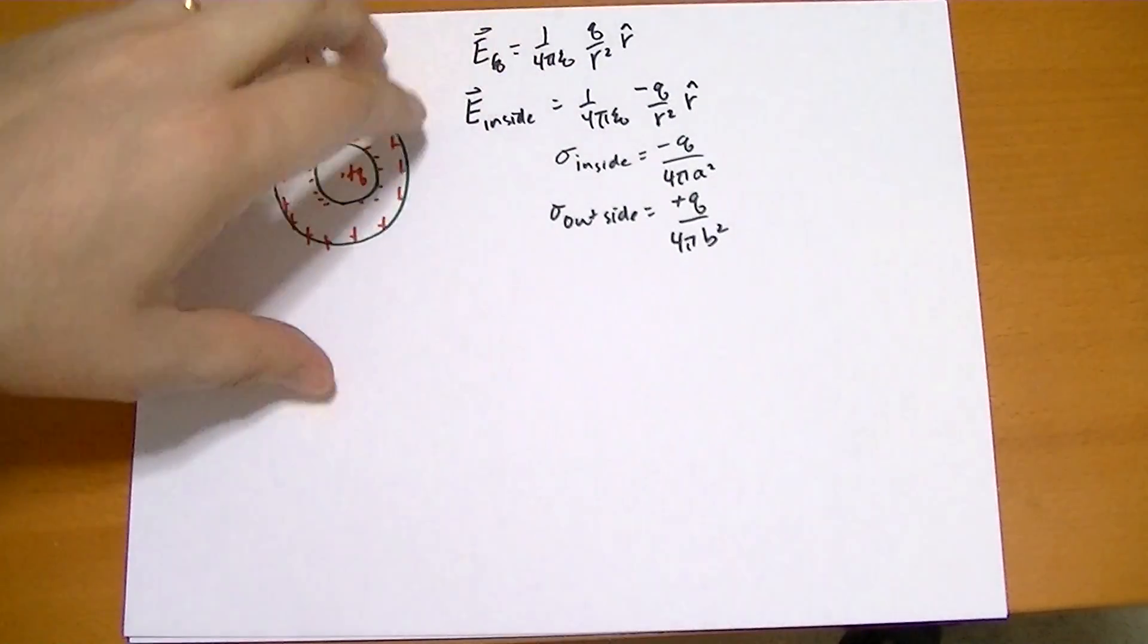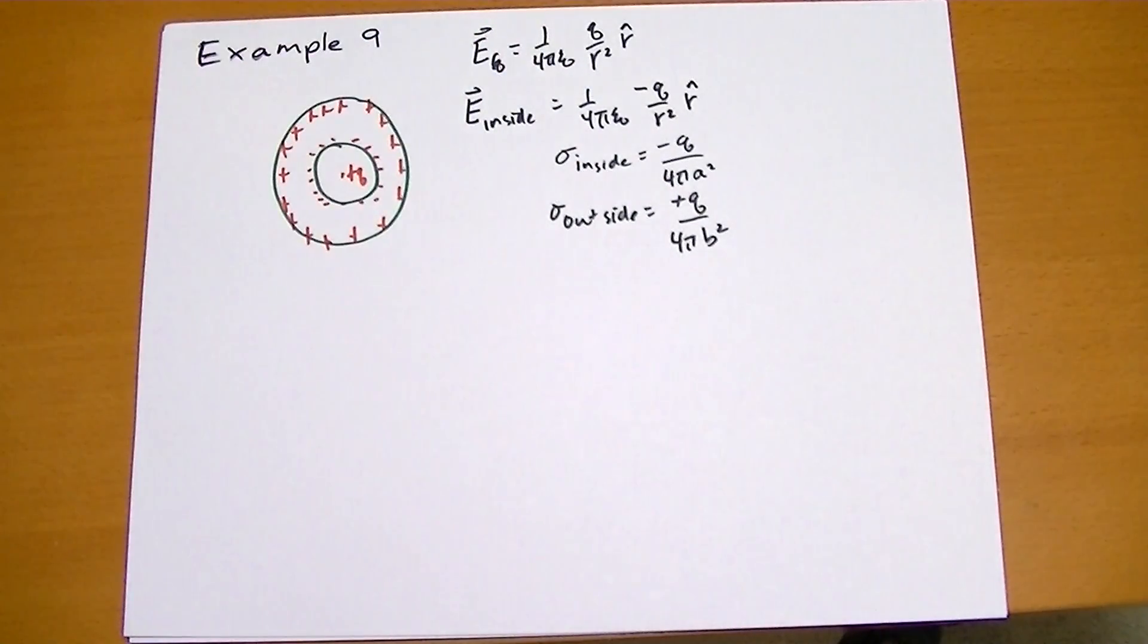So in a way, outside the sphere nothing different is happening. It's as if the sphere wasn't even there, which is kind of curious. Interesting.